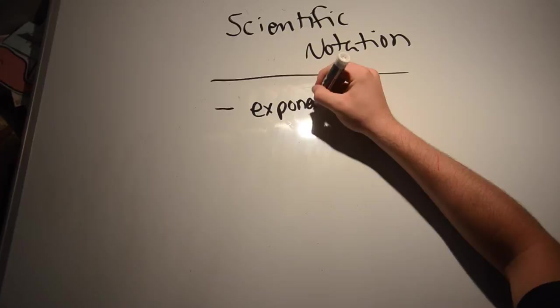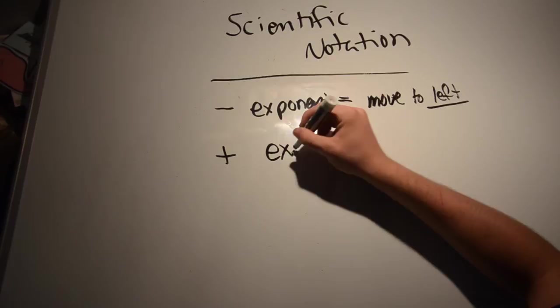Moving on to scientific notation, if the exponent on the 10 is negative, you're going to move the decimal to the left.